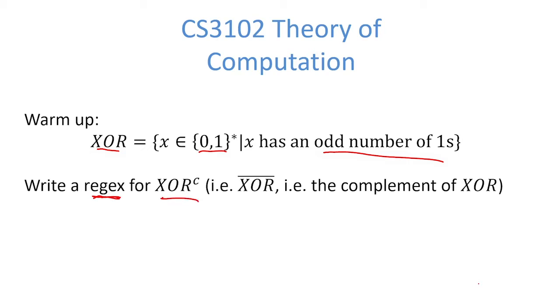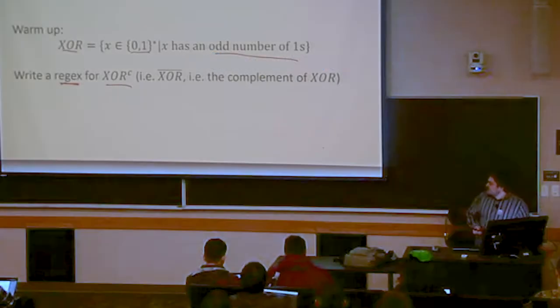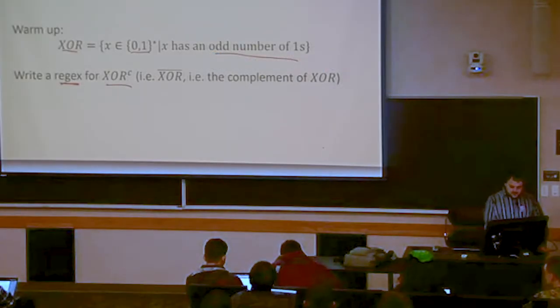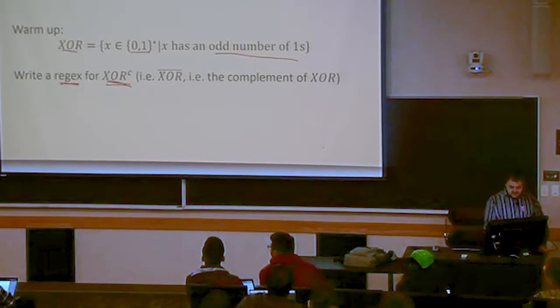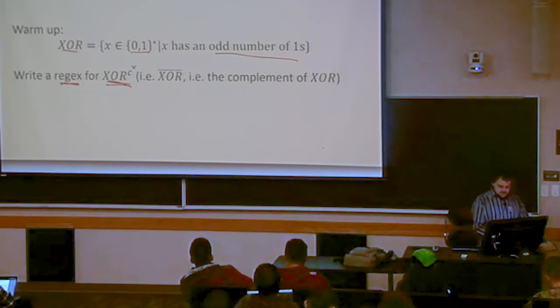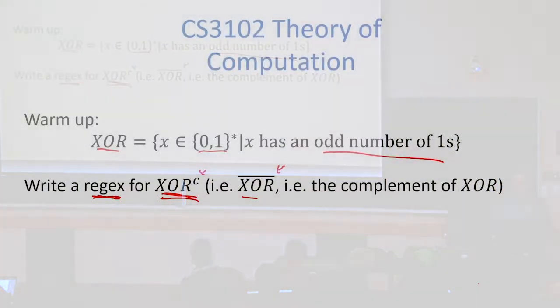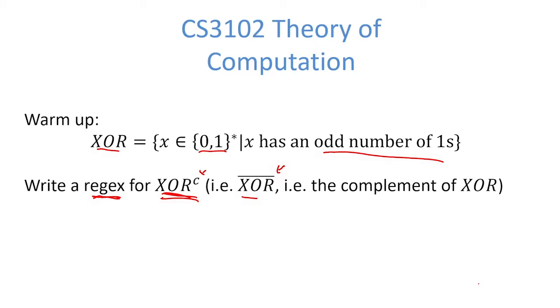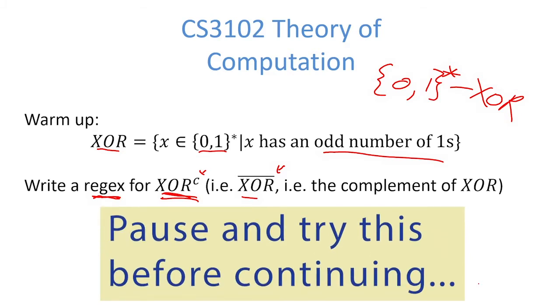There's a few different notations you might have seen before for a complement. You could have this exponent of C for the set, that is one notation for complement, or you could have this overbar thing. The complement in this case means the set of all strings containing zero or one, except for the ones that are in XOR. Come up with a regular expression for the complement of this XOR language.